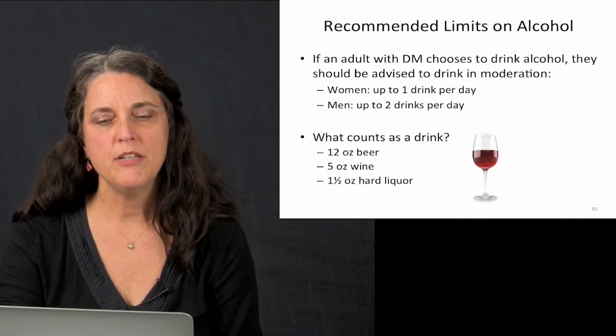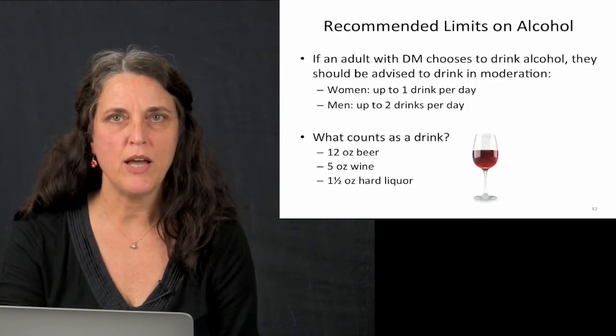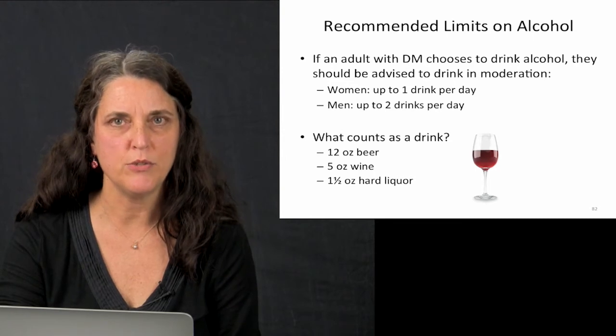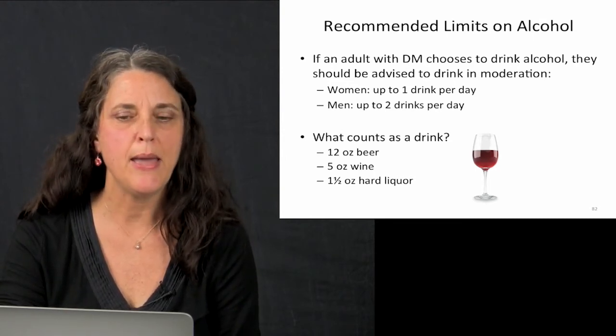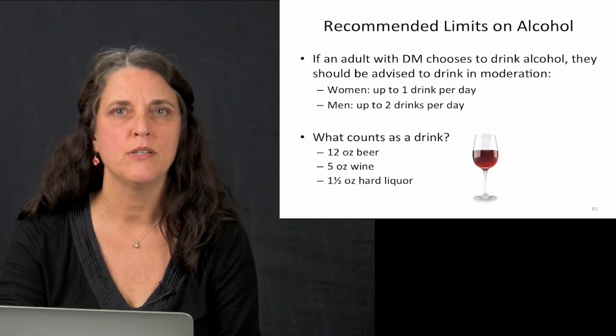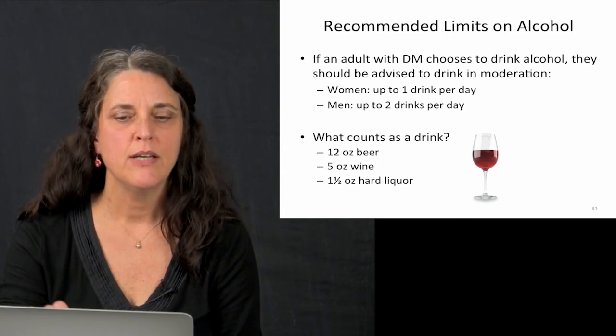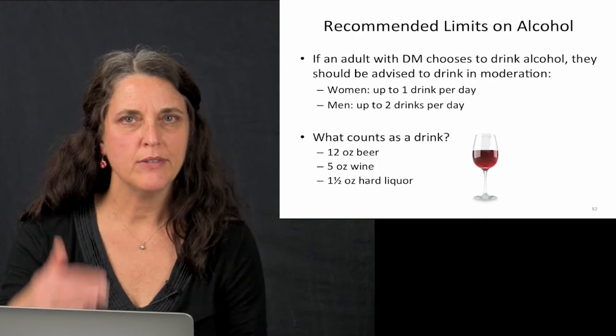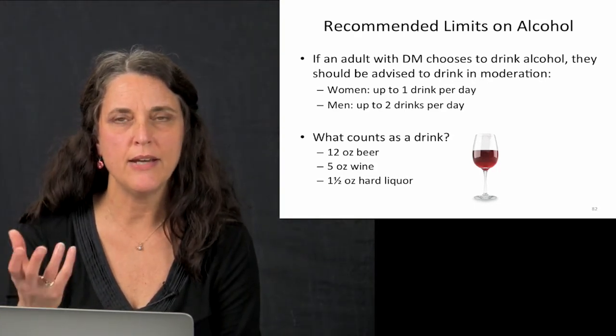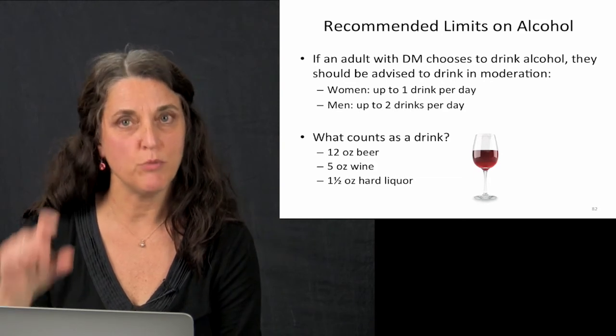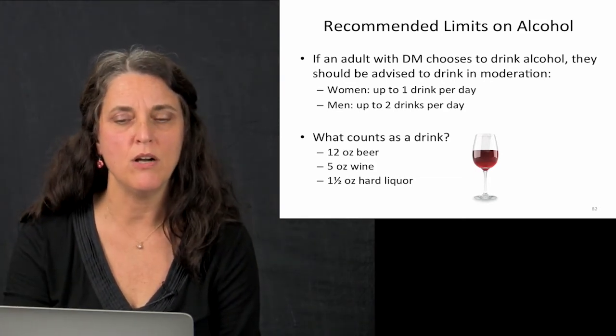So what are the limits? If an adult with diabetes chooses to drink alcohol, the American Diabetes Association suggests that women not have more than one drink a day and men not more than two. So what counts as a drink? It's a 12-ounce bottle of beer, not a big red kegger cup. It's five ounces of wine, not an eight-ounce goblet. And it's one and a half ounces, which is a shot glass of hard alcohol.